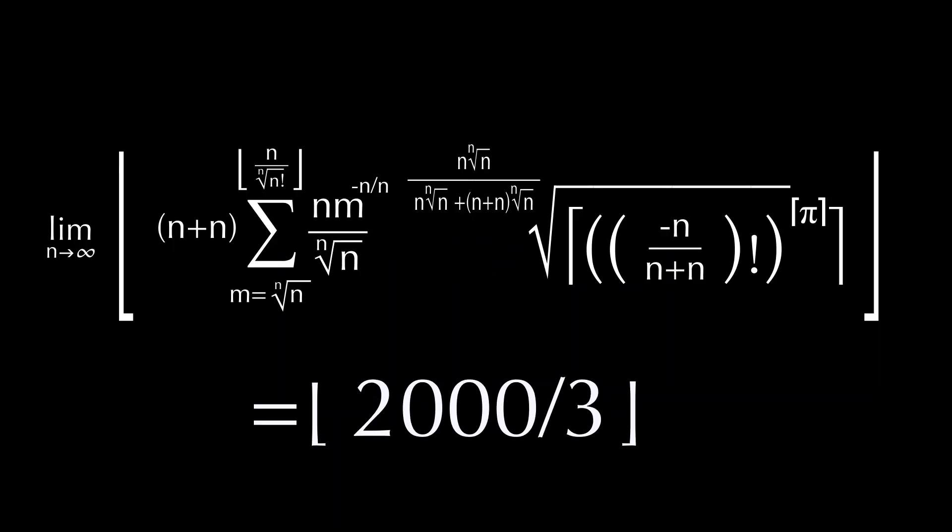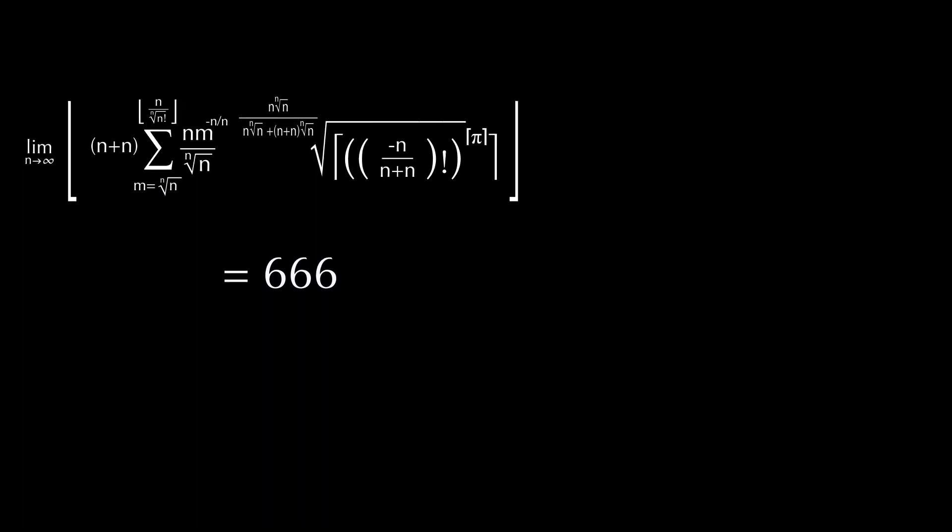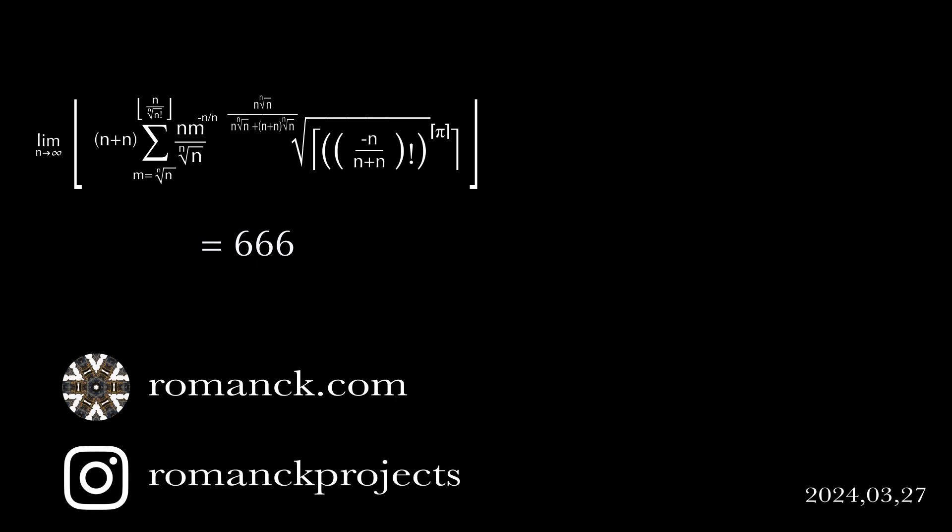And here we finally are. 2 thirds times 1000. This should be familiar to anyone who has seen my other videos regarding numbers with repeating digits. An incredibly elaborate formula with this ridiculous solution.